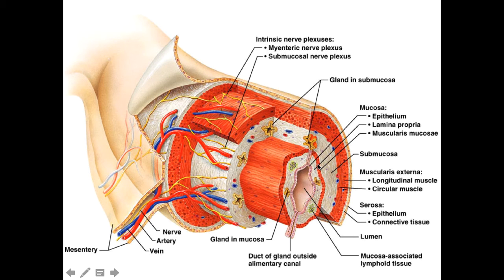All three of these — the epithelial layer, the connective tissue or lamina propria, and then this very thin smooth muscle layer, the muscularis mucosa — are all part of the tunica mucosa.